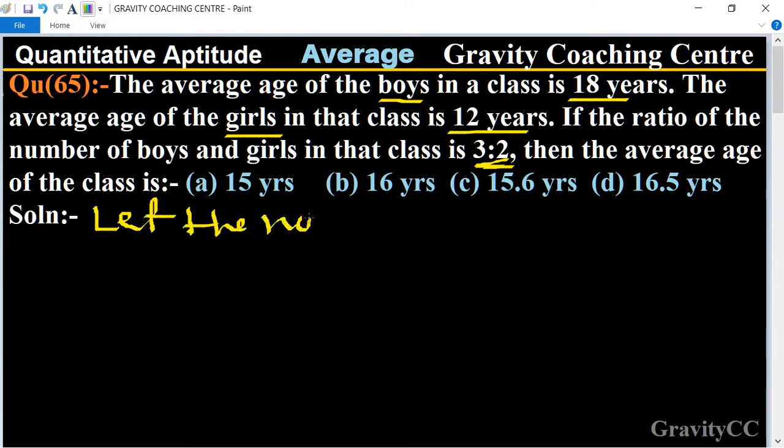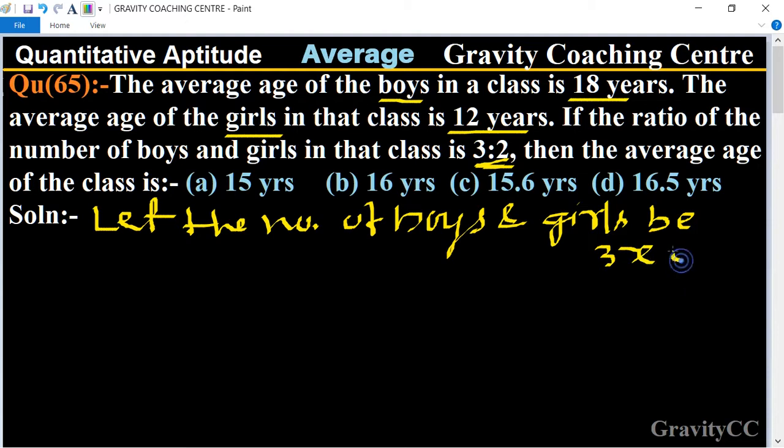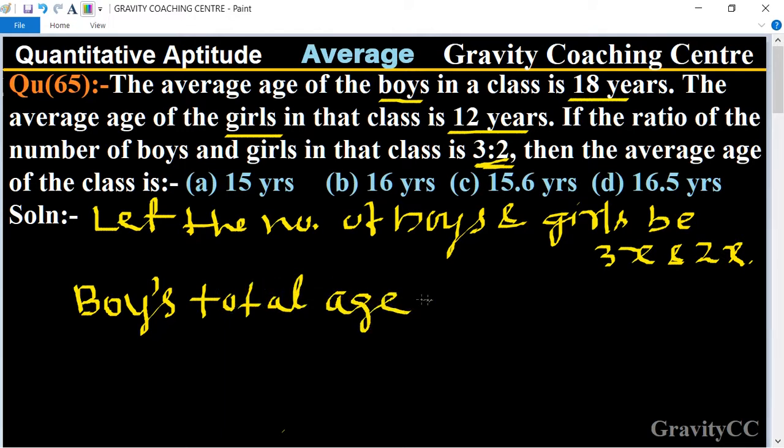Let the number of boys and girls be 3x and 2x. Boys' total age equal to the average 18 into 3x, equal to 54x.